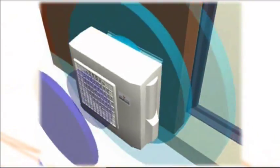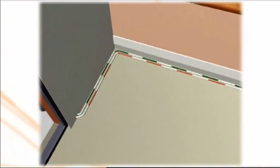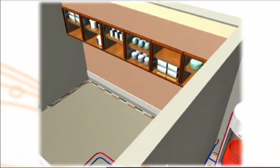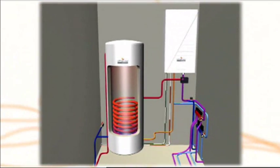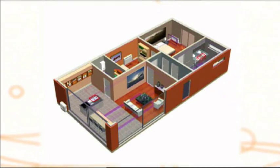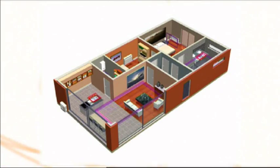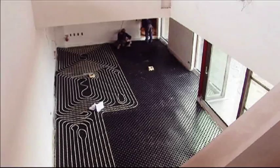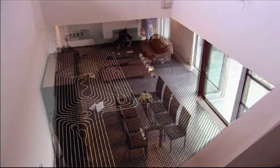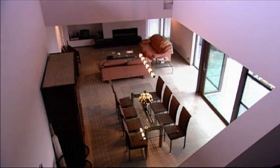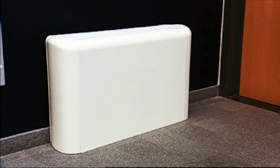The Altherma system is composed of an outdoor unit and an indoor unit, which can be combined with a specific domestic hot water tank. The system is used in connection to the heat emitters chosen by the end user. These can be underfloor loops, low temperature radiators or fan coil units.